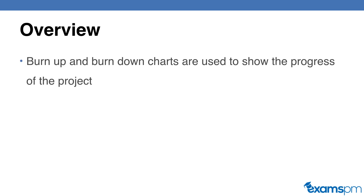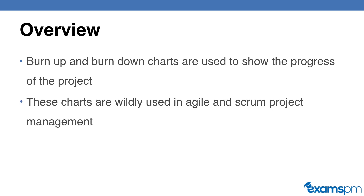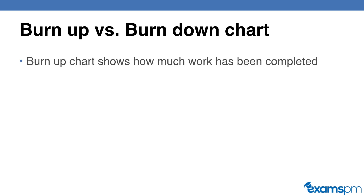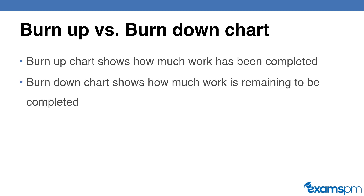Now let's go over an overview first. Both the burn-up and burn-down charts are used to show the progress of the project. These charts are widely used in Agile and Scrum project management, and they have recently been incorporated into the PMP exam as well. Both of these charts will show you how much of the project you have completed and how much you have left to do. The difference is that the burn-up chart shows how much work has already been completed, while the burn-down chart shows how much work is remaining.